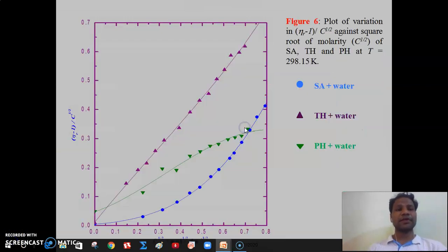Figure 4 shows variation of eta minus 1 by root C as a function of square root of molality for the studied system. This figure has been used to calculate Jones-Dole coefficients A, B and D.